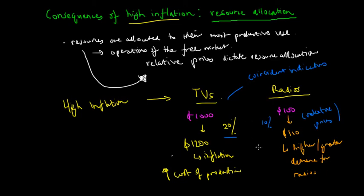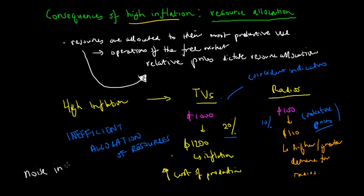So what happens here is there is now an inefficient allocation of resources. This is because producers, when there is a high inflation environment, don't know whether the price of certain goods and services have increased due to relative prices, which therefore encourages businesses to reallocate resources to that sector, or due to the underlying inflation rate. This is also known as noise in the price system.